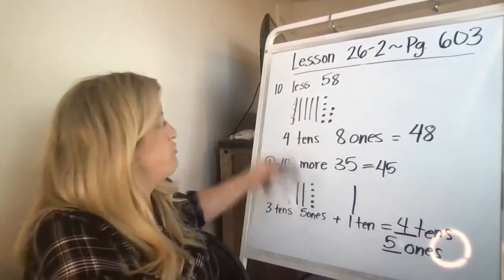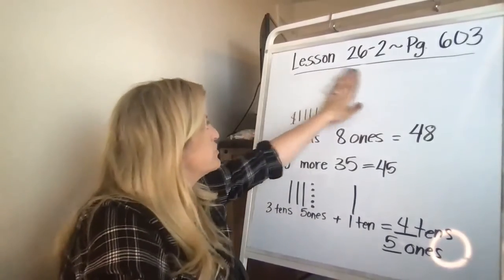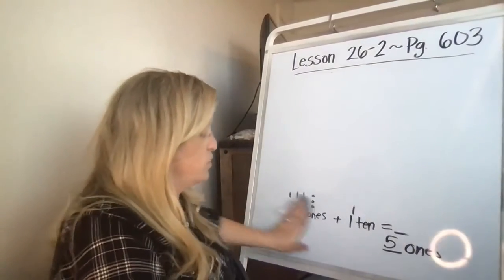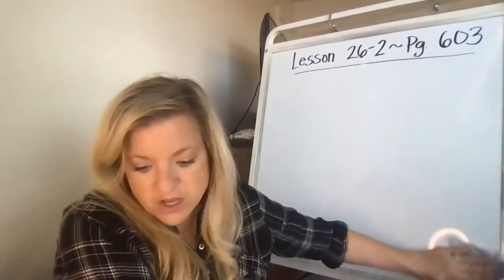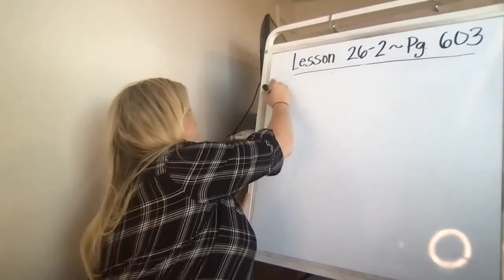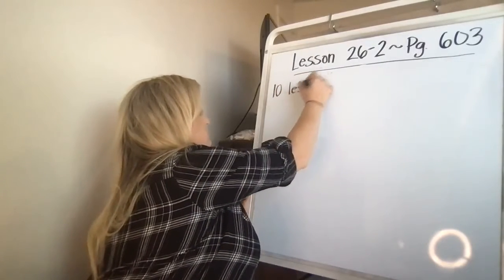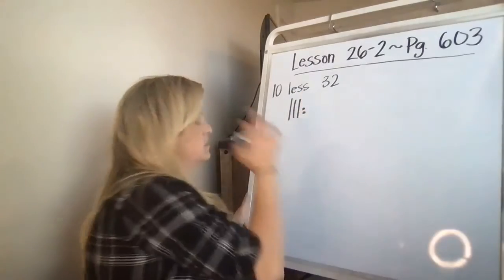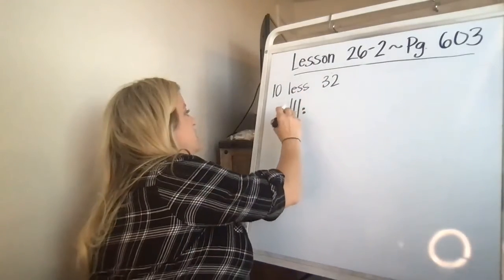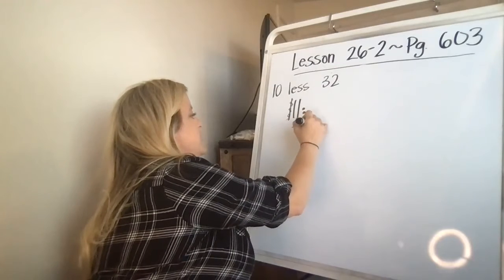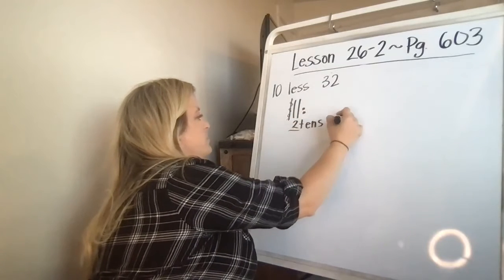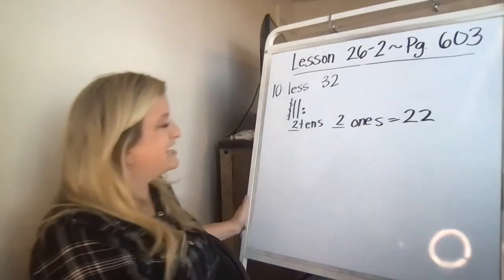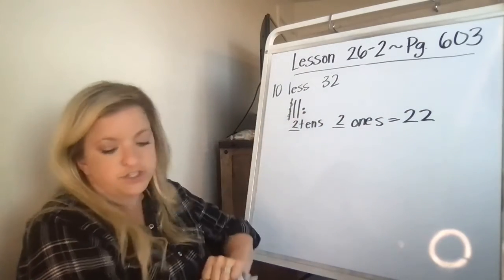Problems two through four are going to have you do what we did before where you're either going to draw another stick of 10 or cross out a stick of 10, depending on what the question is asking of you. So it says, what is 10 less than 32? So you're going to draw one, two, three, and two, and then you're going to cross out a stick of 10. And now you have two tens and two ones, which equals 22. So 10 less than 32 is two tens and two ones.